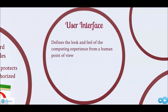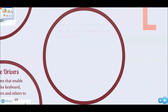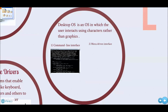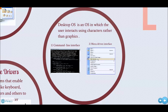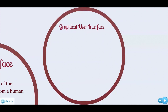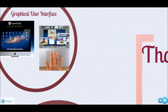User Interface defines the look and feel of the computing experience from a human point of view. Desktop Operating System is an operating system in which the user interacts using characters rather than graphics. Features include Command Line Interface where commands are typed, and Menu Driven Interface where commands are chosen from on-screen lists. Graphical User Interface is another type of user interface. Thank you.